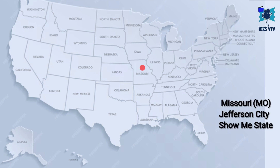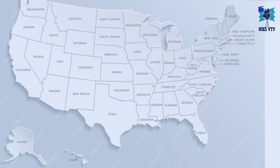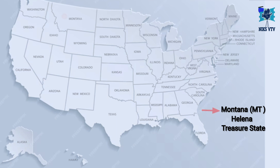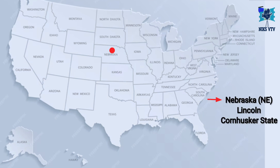Next state is Missouri, its abbreviation is MO, its capital is Jefferson City, its time zone is CST, and its nickname is Show Me State. Next state is Montana, its abbreviation is MT, its capital is Helena, its time zone is MST, and its nickname is Treasure State. Next state is Nebraska, its abbreviation is NE, its capital is Lincoln, its time zone is CST, and its nickname is Cornhusker State.